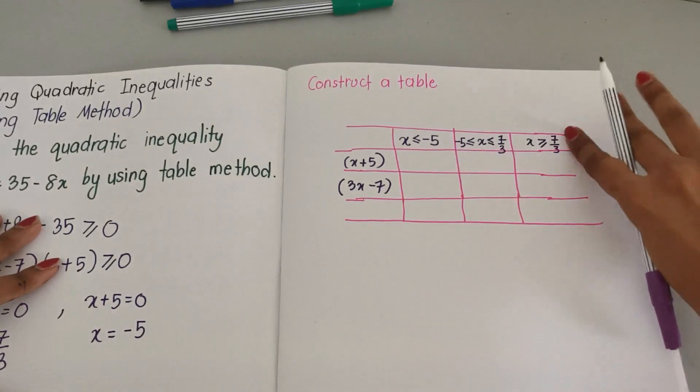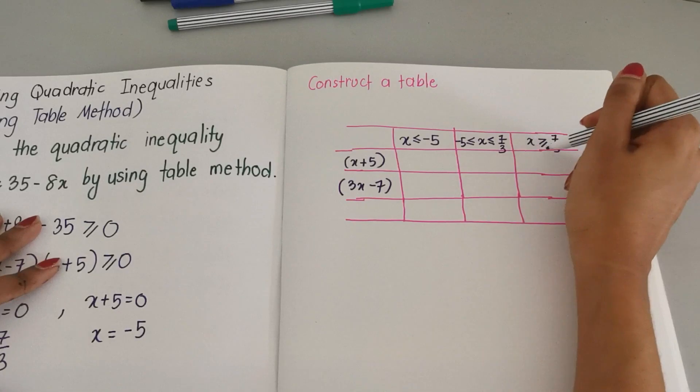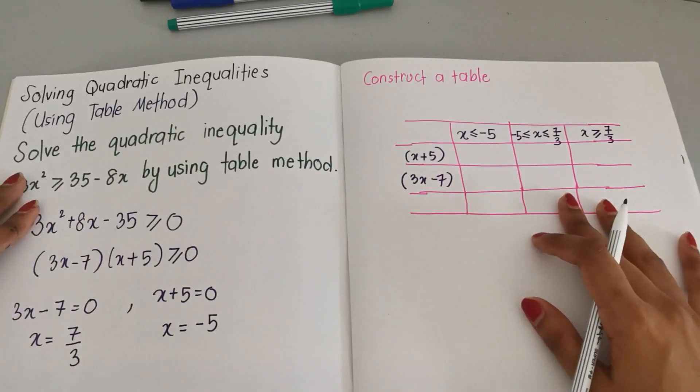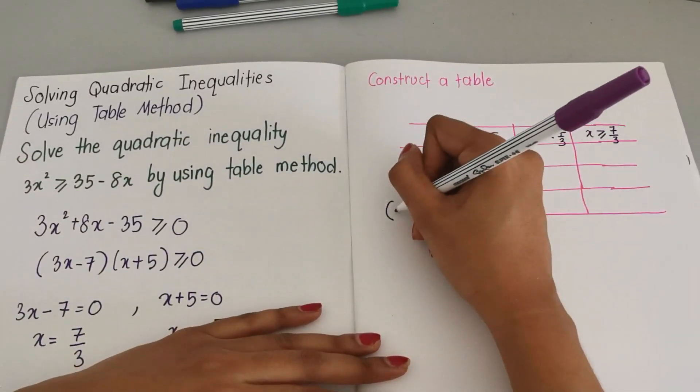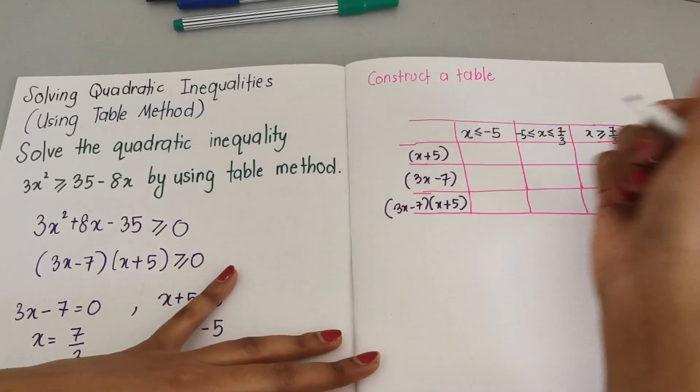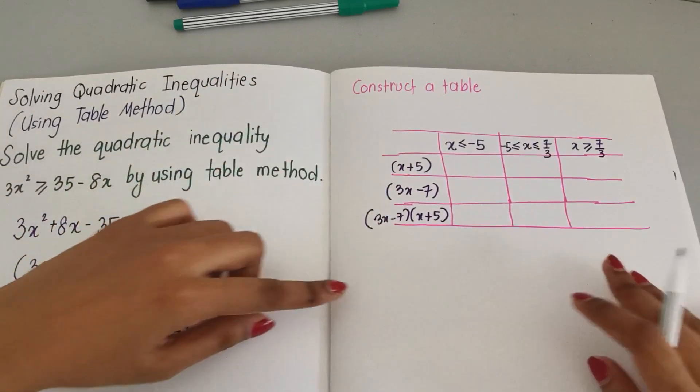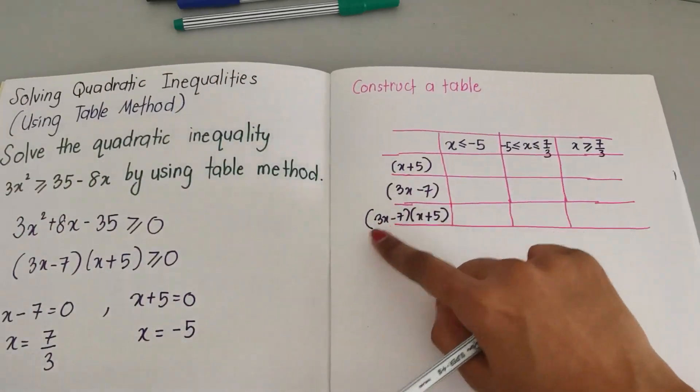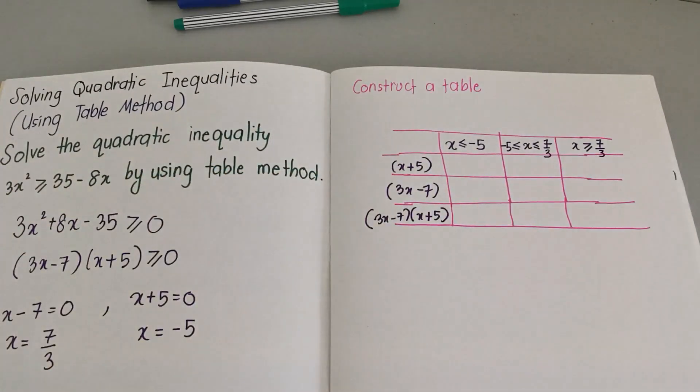Your x must be less than equal to here, the x must be in the middle, and the most right one you have to write x greater than. For the last one I'm going to write 3x - 7 and x + 5, so we have two factors and then the last one combined factors.